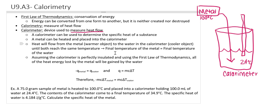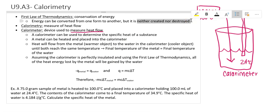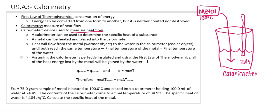We use a styrofoam cup because it's a good insulator, so we make a big assumption: assuming the calorimeter is perfectly insulated and knowing that energy is neither created nor destroyed, we assume that all of the heat energy lost by the metal will be gained by the water. The metal loses energy flowing to the cooler object, and the water gains that energy. Energy can't be destroyed so it has to go somewhere.